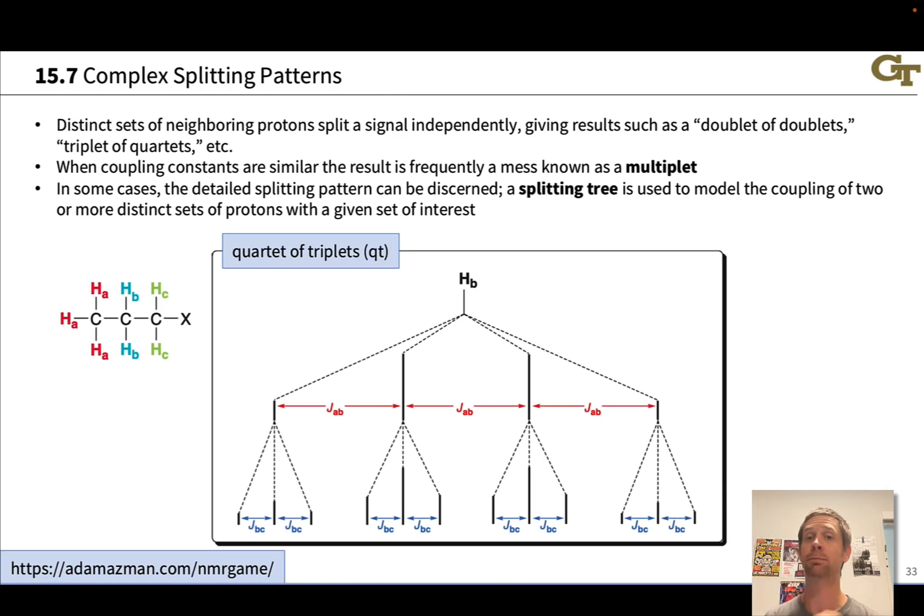However, when we have more than one equivalent set of protons, either geminal or vicinal to a proton or set of protons of interest, then splitting gets more complicated and we can't apply the n plus one rule directly. We often get a mess of sub-peaks, a very large number of sub-peaks, for example.